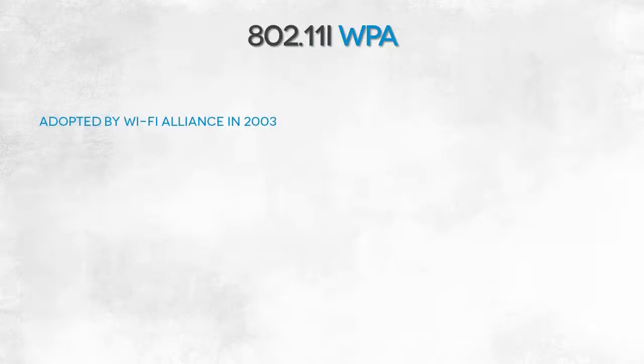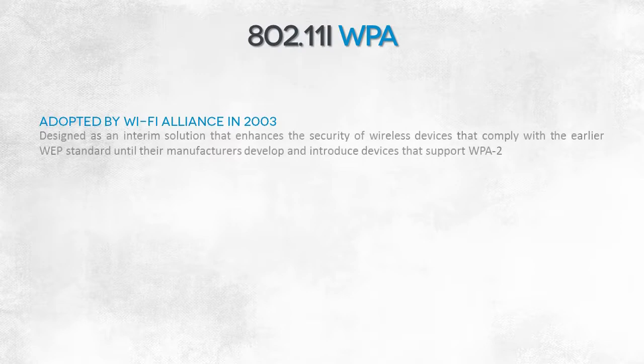WPA was ratified by the Wi-Fi Alliance in 2003. As we mentioned, this was an interim solution. The name is a bit misleading — WPA2 suggests it's the improved, more secure version of the WPA protocol, but it's actually the basic version of WPA, one that did not catch on. Users and manufacturers had to be encouraged to move to the new standard. WPA was replaced with WPA2, and it was decided that the interim version would be called WPA.